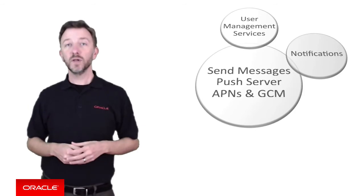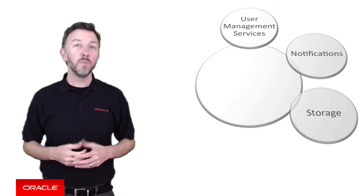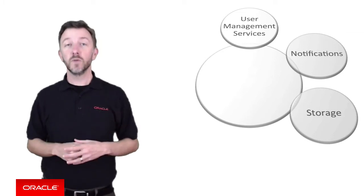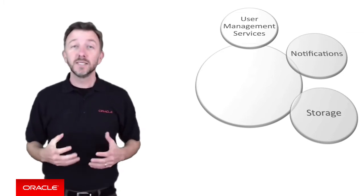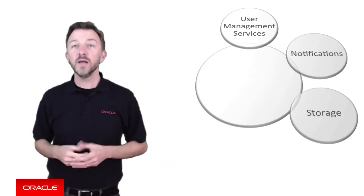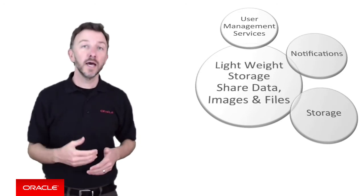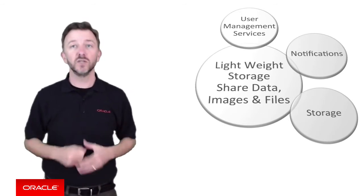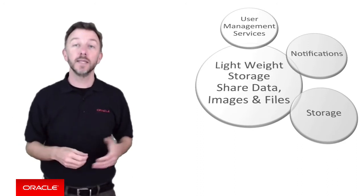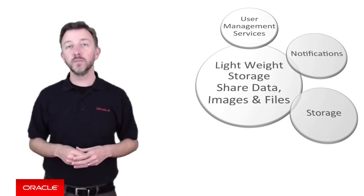The next core MCS platform API is that of storage. Imagine you're building a mobile app where you need to share a document or a selfie picture between different mobile users temporarily. MCS provides lightweight storage for mobile applications and their users to share data, including images and files on the MCS server itself. We can also cache information from backend enterprise systems that the mobile applications are accessing, all accessible via secured REST services or the MCS mobile client SDK.